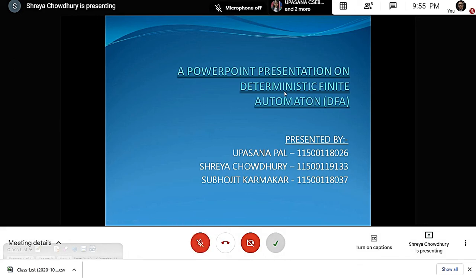Hello, we are going to present a PowerPoint on Deterministic Finite Automaton (DFA). First, we'll see what DFA is. DFA is a finite state machine which accepts or rejects a given string of symbols by running through a state sequence uniquely determined by the string. Deterministic refers to the uniqueness of the computation run.